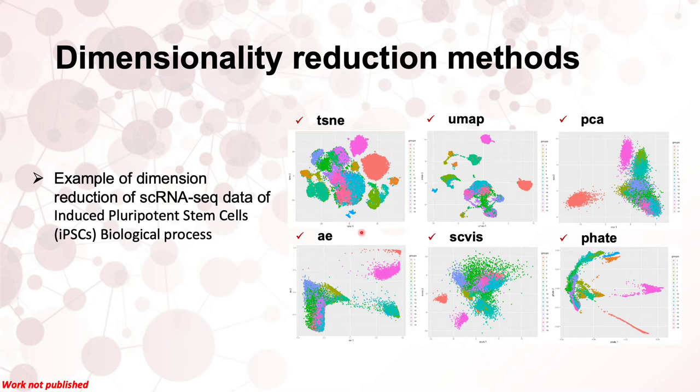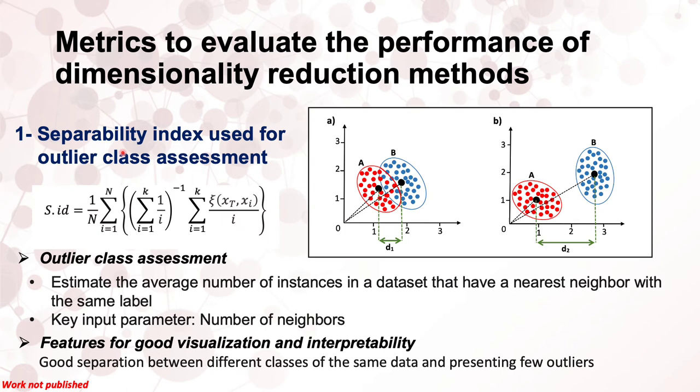We then applied those methods to reduce the single-cell data of the biological process related to induced pluripotent stem cells. Again, as expected, all the different methods provide different outputs. That leads us to ask which method is best suited to be biologically meaningful for visualization and interpretability.